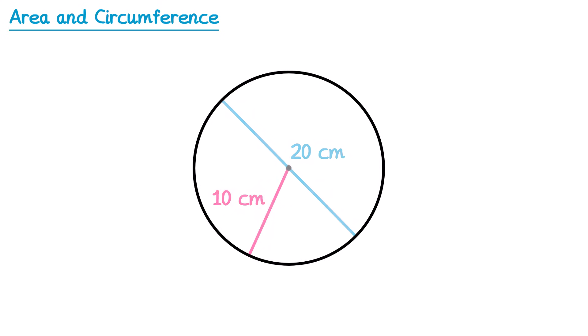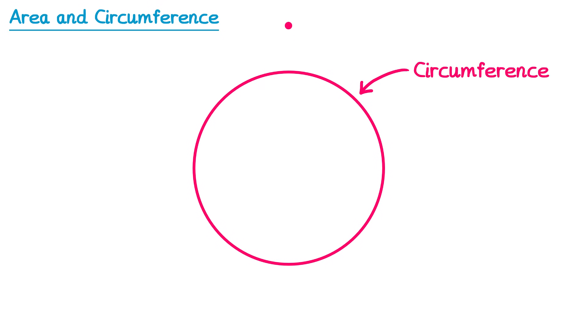In this video we are going to find the area and circumference of a circle. We are going to start with the circumference. Imagine we placed a point on the outside of the circle, and then we sent it around the circle and traced out this red path here. The total distance this point has travelled is known as the circumference of the circle. You could think of the circumference as being a special name for the perimeter of a circle.